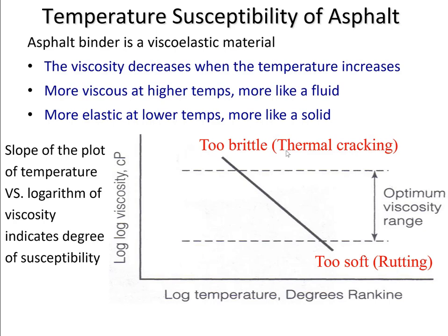When the asphalt becomes very stiff, it means that a tiny change in temperature will cause a huge difference in viscosity. When asphalt is mixed with aggregates, this mixture will perform properly only if the asphalt viscosity is within the optimum range. If the viscosity of the asphalt is too high — higher than the optimum range — the mixture will be too brittle and susceptible to low-temperature cracking, which is called thermal cracking.